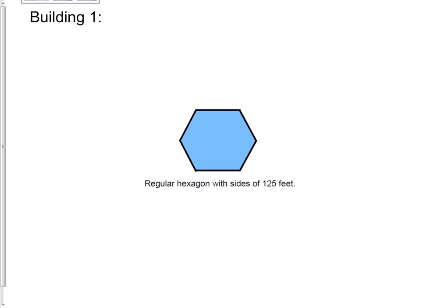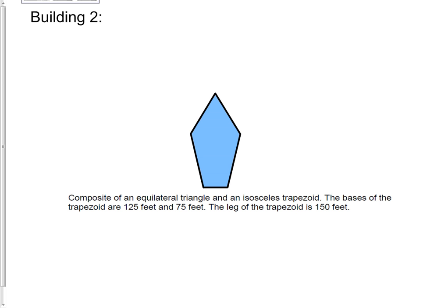Building number one was a regular hexagon with sides of 125 feet. Building two is a composite of an equilateral triangle and an isosceles trapezoid.